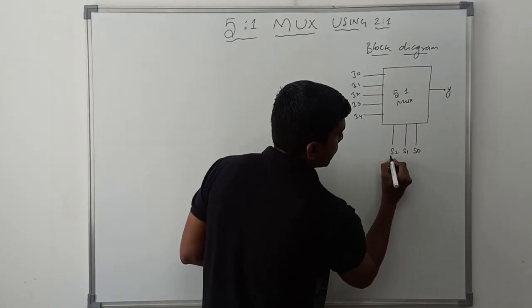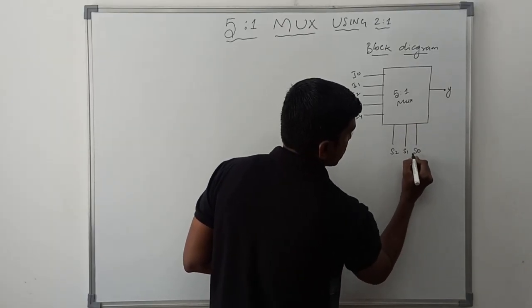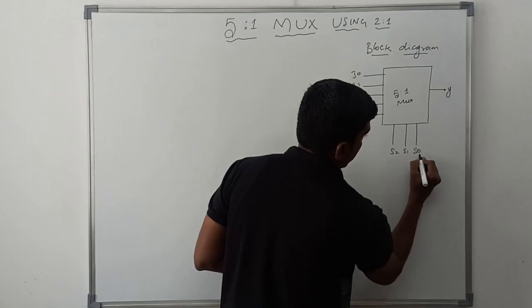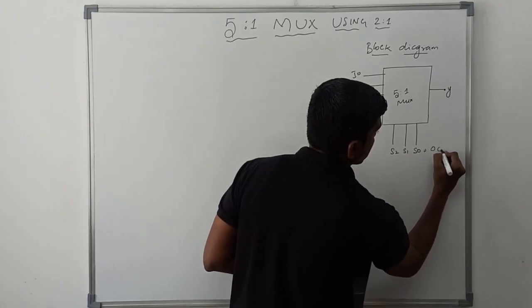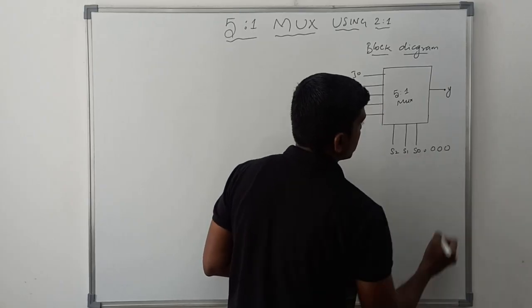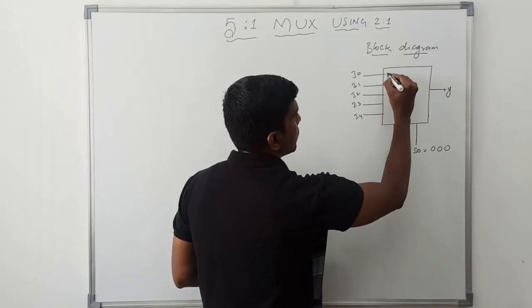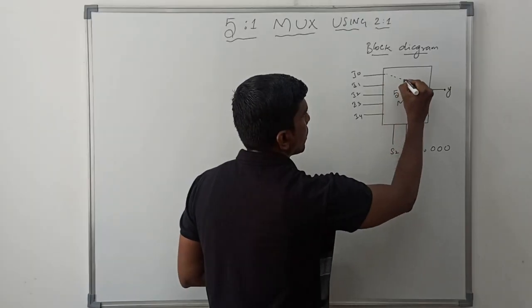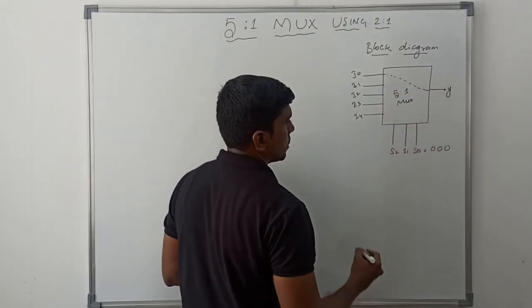For example, when all 3 selection line values s0, s1, s2 are 0, the i0 input is connected to output.